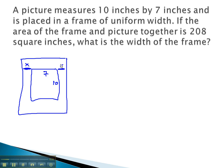This x is on both sides of the picture, so when I want to describe the top of the picture frame here, we have a 7, an x, and an x, or a total of 7 plus 2x. Similarly, the frame is on the top and bottom, so the height of the frame becomes 10 plus 2x.